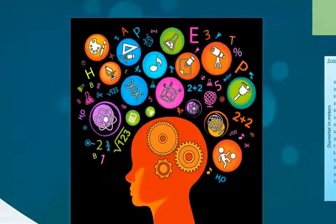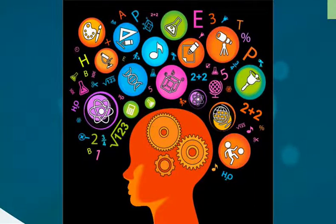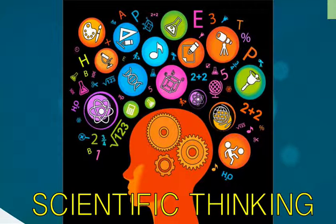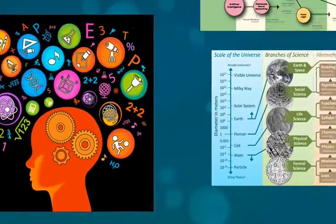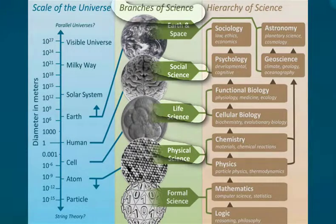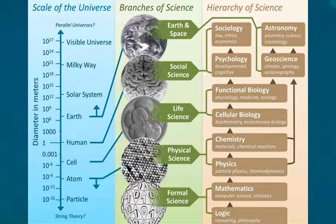For thousands of years, scientific thinking has tried to both explain the reality around us and to predict the consequences of events, processes, and our human actions. It has served to organize human knowledge and to promote human progress. Especially in the last 400 years, being the backbone of the modern age of enlightenment, science has branched into various scientific disciplines, such as the physical sciences, life sciences, and social sciences, which developed almost independently.